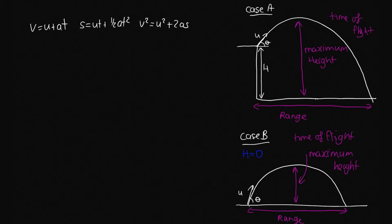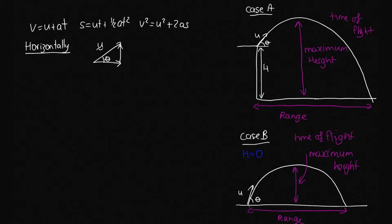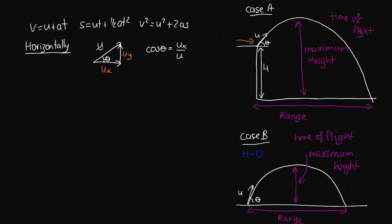We will consider the horizontal motion and the vertical motion separately. Horizontally, the first thing we want is our initial velocity in the horizontal direction. We've got the velocity vector U, and we can split it into components. We've got angle theta, giving us Ux and Uy. From trigonometry, cos theta equals adjacent over hypotenuse, so cos theta equals Ux over U, which gives us Ux equals U cos theta. That's the initial velocity in the x direction.